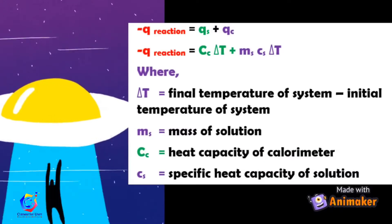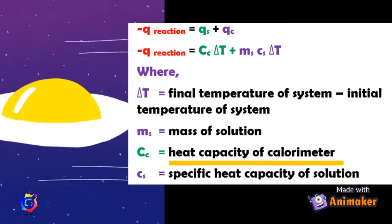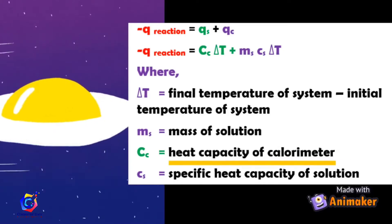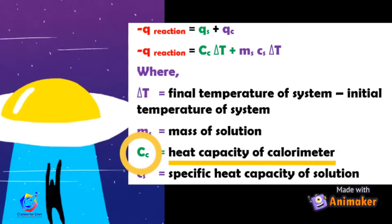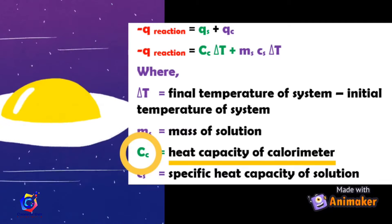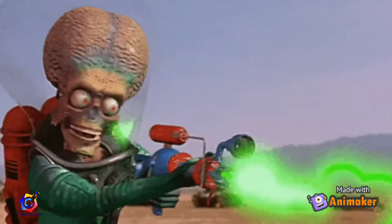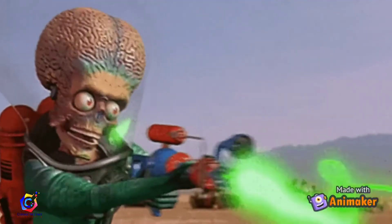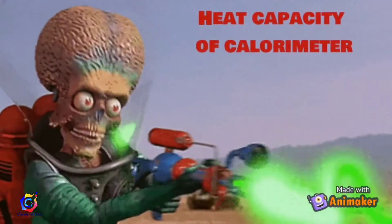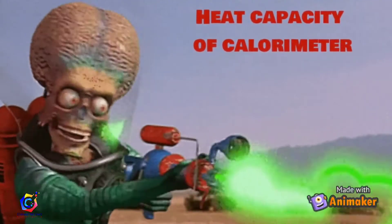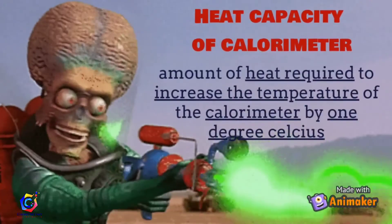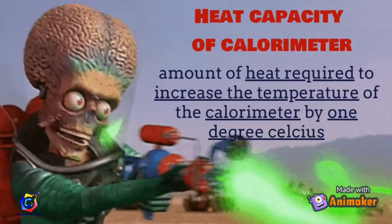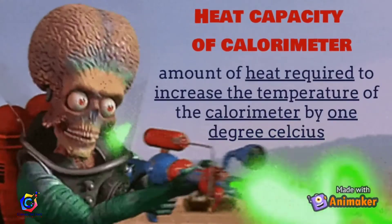We are going to identify the heat capacity of the calorimeter, which is represented by capital C, small c. The heat capacity of the calorimeter is the amount of heat required to increase the temperature of the calorimeter by 1 degree Celsius.